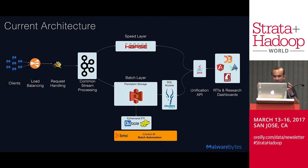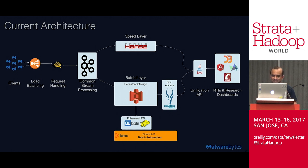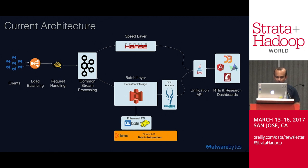We've used the speed layer and batch layer and provided a unification API. From there we've given capabilities to our security research and intelligence teams to dig into the data, look at real-time indicators, look at historical trending, look at leaderboards, and make decisions on where to spend their focus.